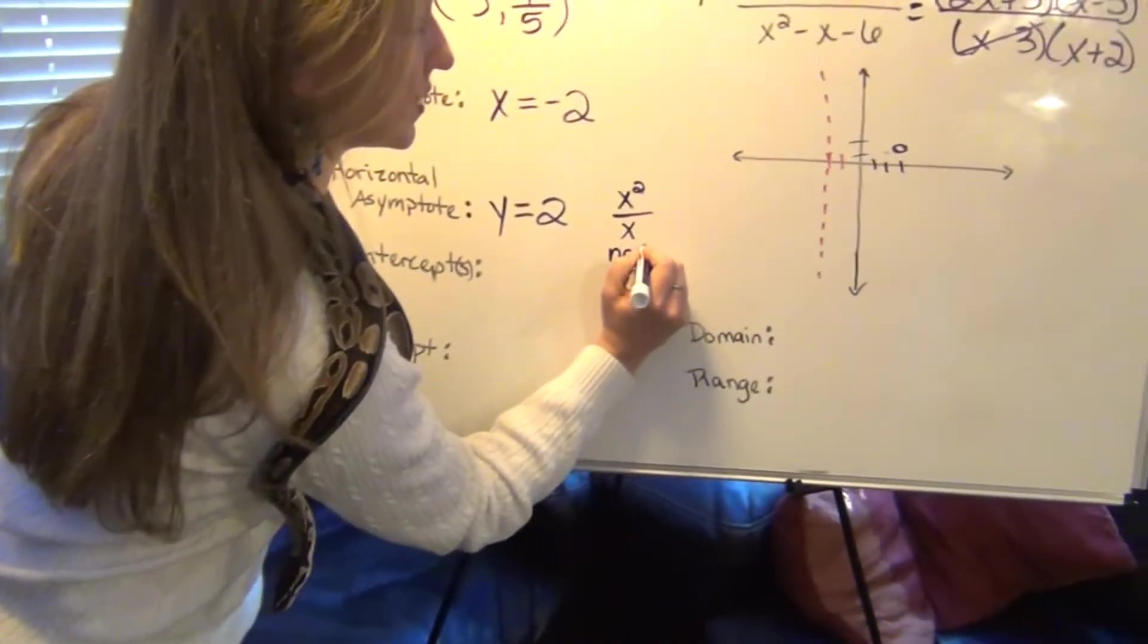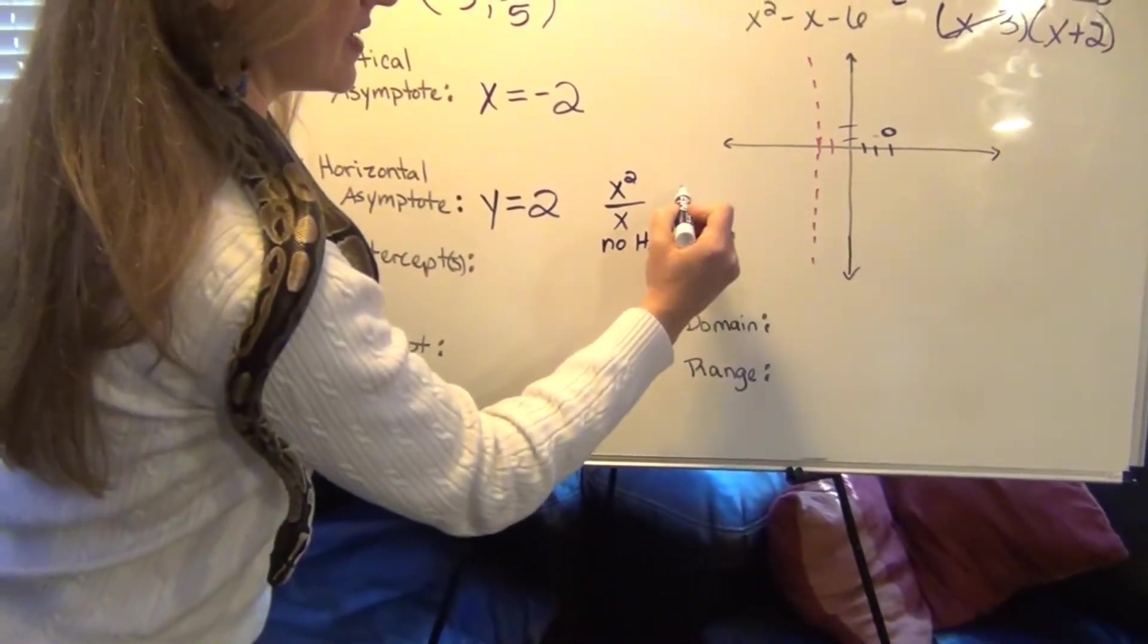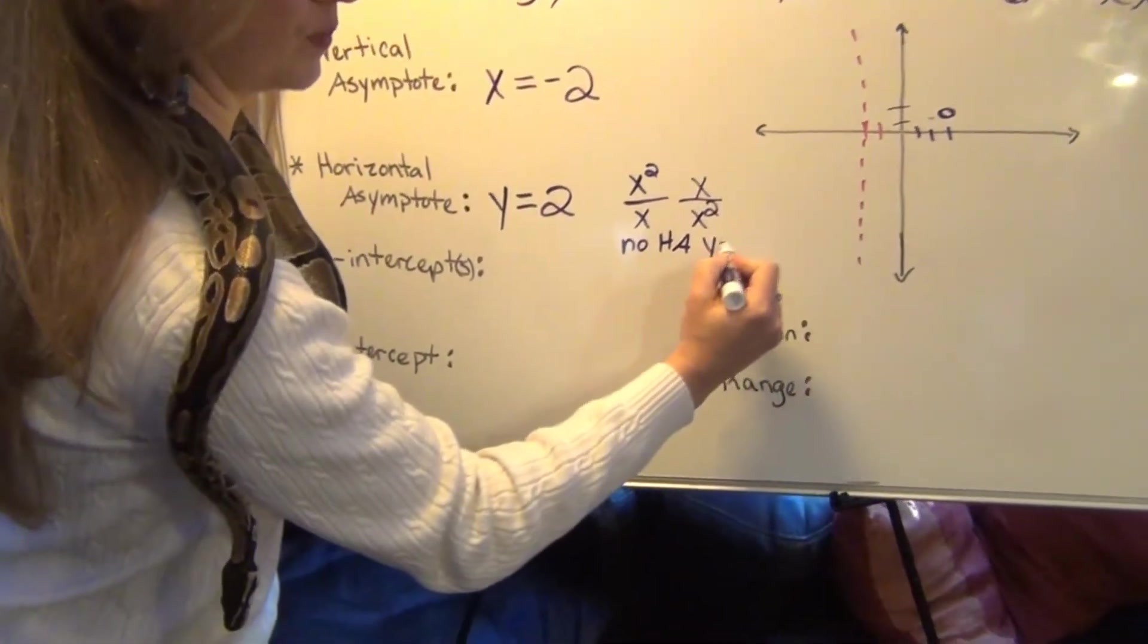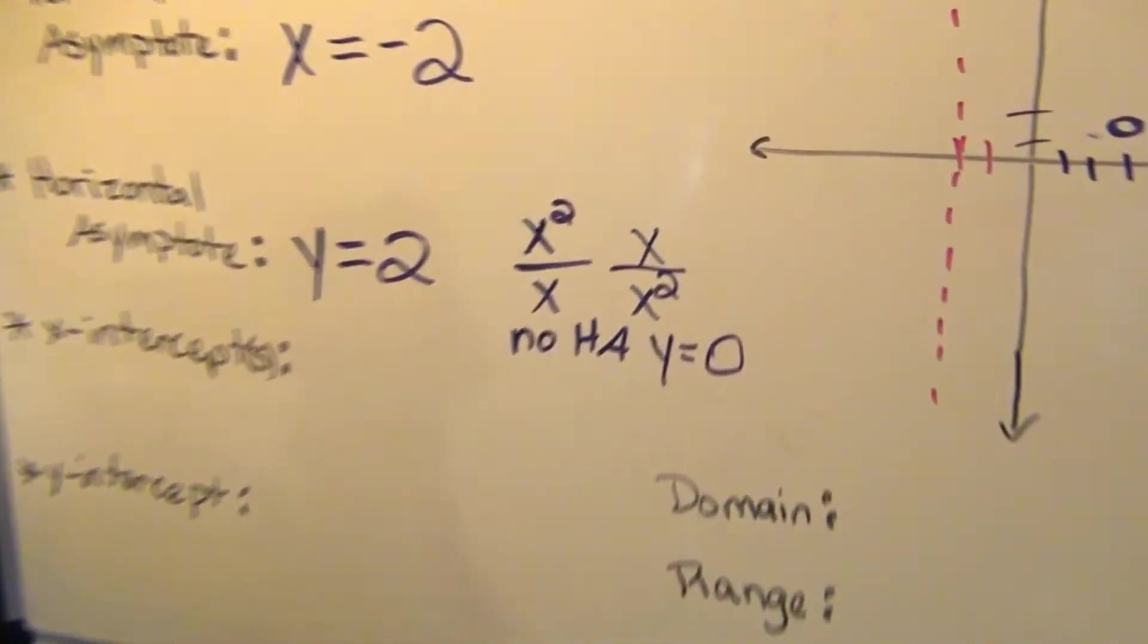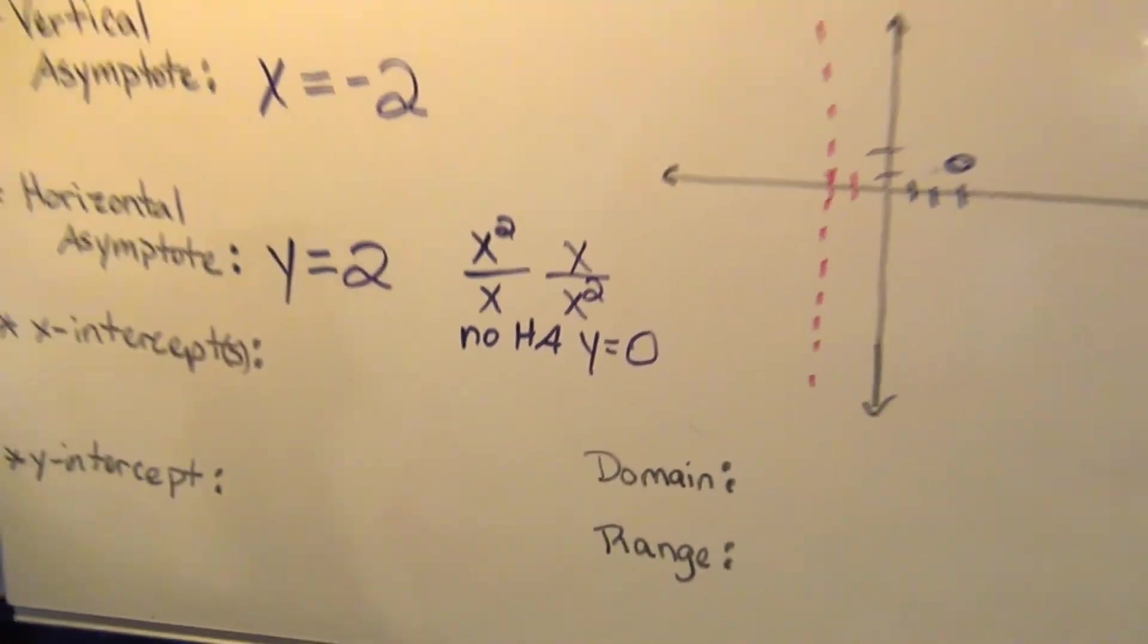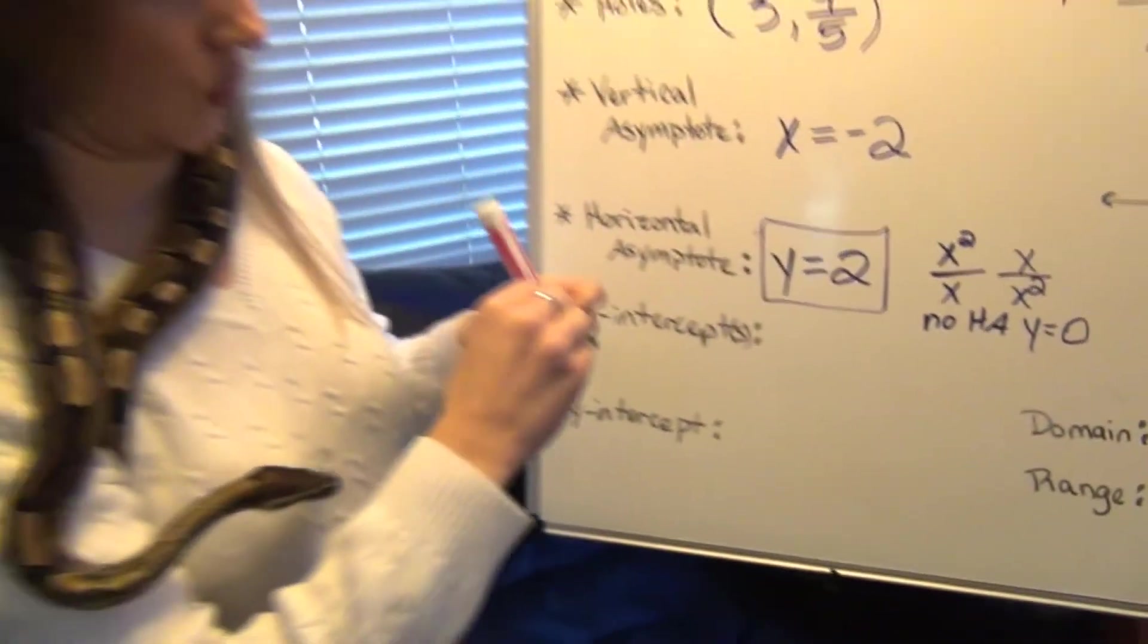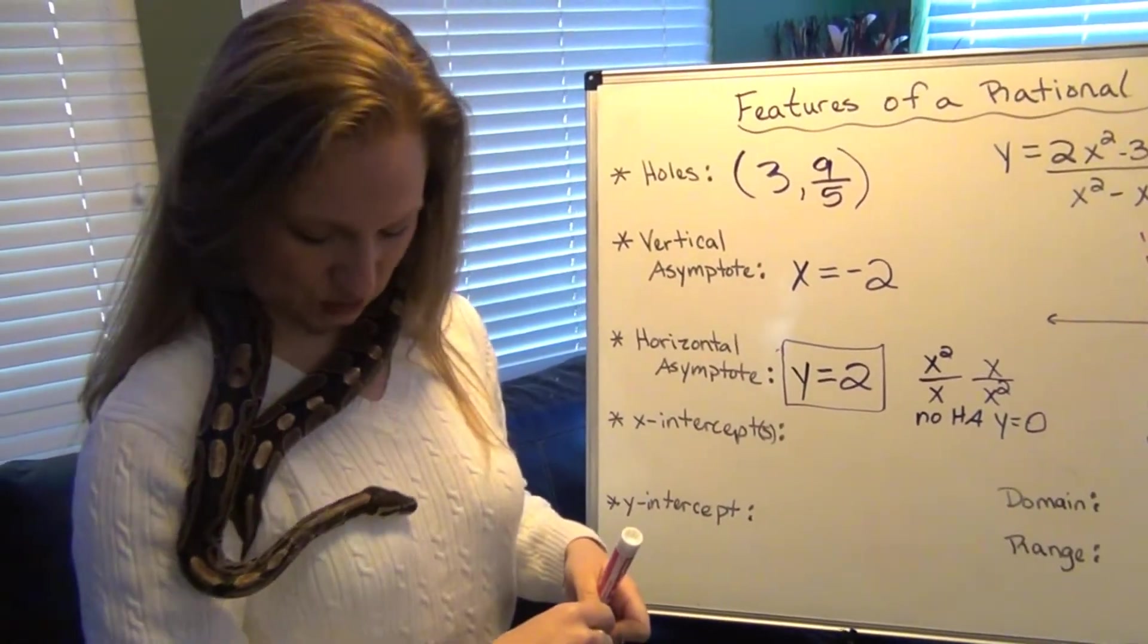So this is the case when we have the same degree polynomial in the numerator and the denominator. If by chance you have a polynomial that has a higher degree, for example, let's say you had an x squared over an x. If you had a higher degree in the numerator, then in that case we call this top heavy. And so there is no horizontal asymptote in this case. If you have the case where the bottom is heavy, that would be a horizontal asymptote of y equals 0. So those are the three possible cases. In this case, they happen to be the same.